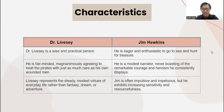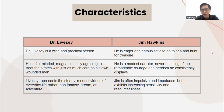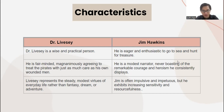Jim Hawkins is an eager and enthusiastic young boy, keen to go to sea for treasure. He is a modest narrator, never boasting about his remarkable courage and heroism that he displays throughout the story. Jim is often impulsive and impetuous, but he also exhibits increasing sensitivity and resourcefulness over the course of the story.